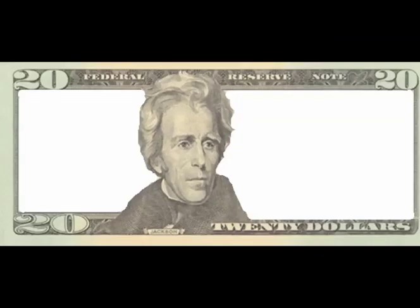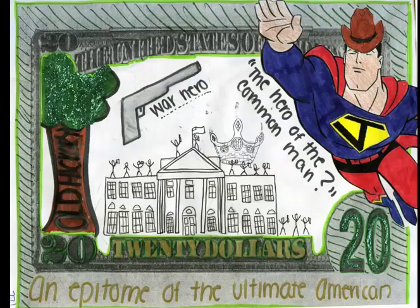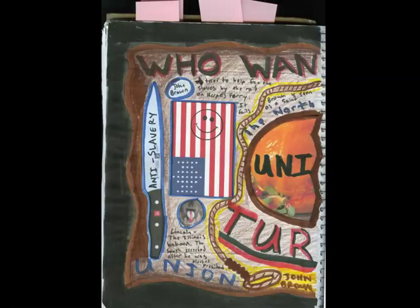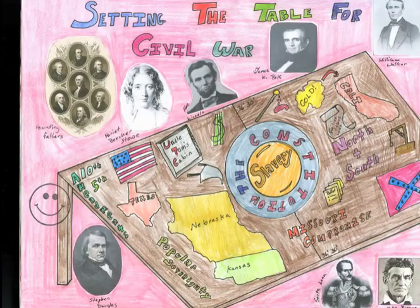We also do things with Andrew Jackson's money and other kinds of money. Notice how the money's been decorated, just like a character. Jackson the Superman. This is one half of a project called Setting the Table for the Civil War. Here's the other half — and yet, all on one page. Setting the Table for the Civil War. You may find these useful down the road.